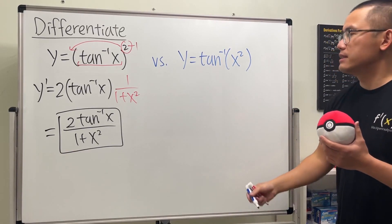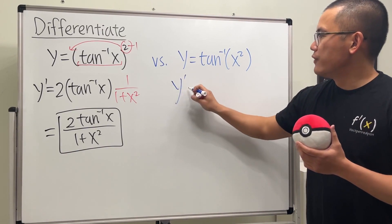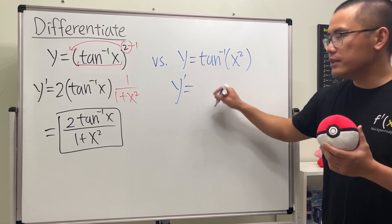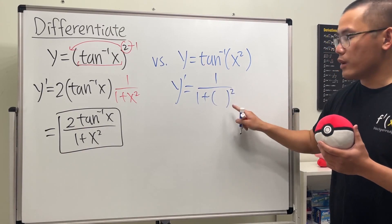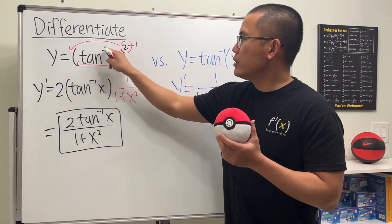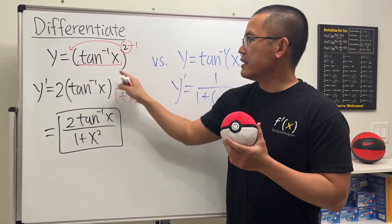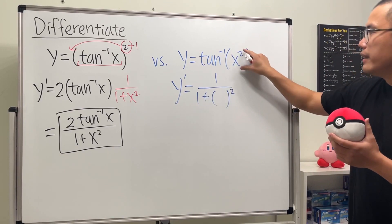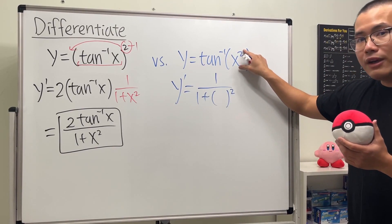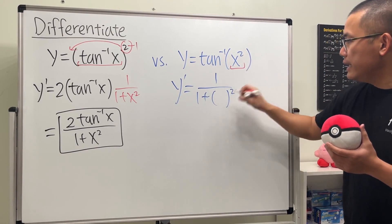Here we go. Differentiating inverse tangent, we get one over one plus something squared, right? Just like this - you see inverse tangent of x, the derivative of that is one over one plus x squared. But here, the input is x squared, so you have to put the input here inside.